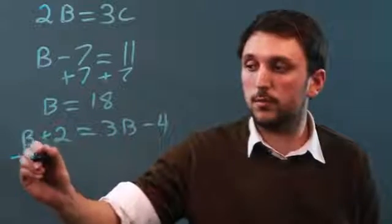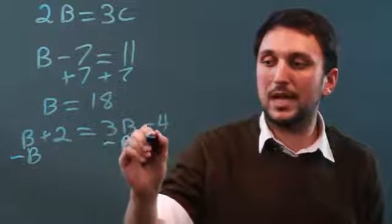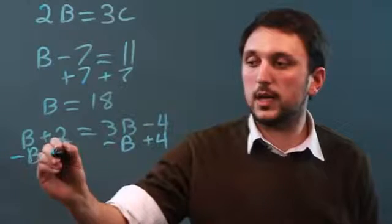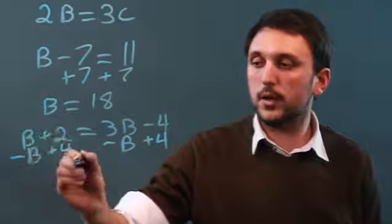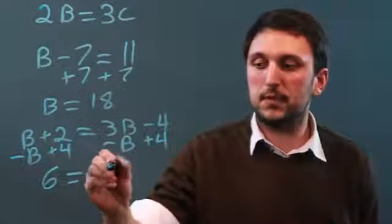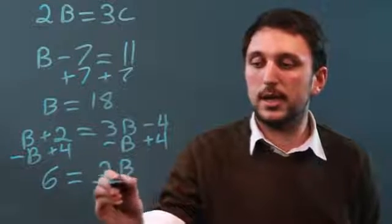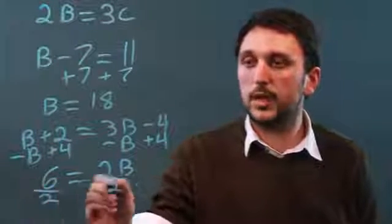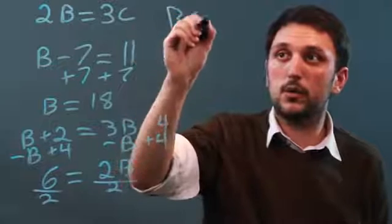So here we subtract B from each side, and we add 4 to each side. So now we are left with 2 plus 4 is 6, equals 3B minus B is 2B. We divide by 2, and we get B equals 3.